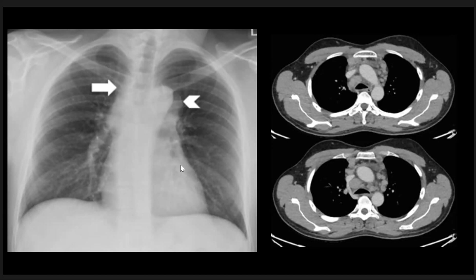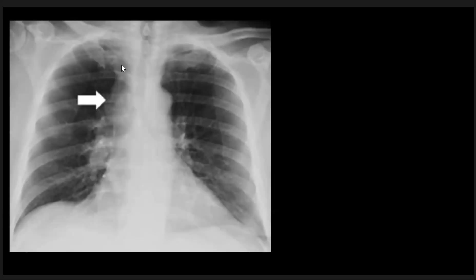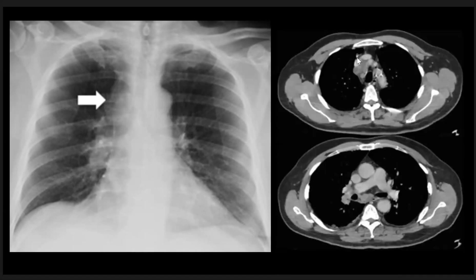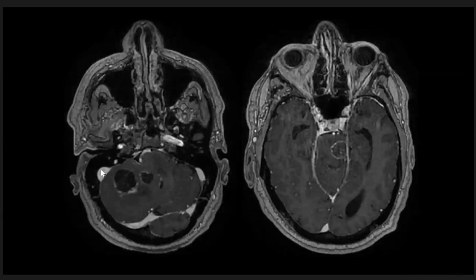That case proved to be sarcoidosis. Here is another patient with right paratracheal stripe thickening, and the right hilum is also enlarged and thickened. The CT scan shows lymph nodes in the hilar and subcarinal regions. The biopsy of this patient proved to be small cell lung cancer, and the patient also has multiple brain metastases.